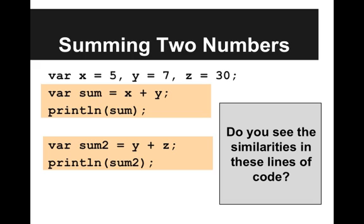Then I make a new variable called sum, and that's equal to x plus y, and I print that out. Then I make another variable called sum2, and that is y plus z, and I print that out.